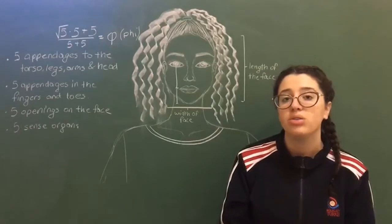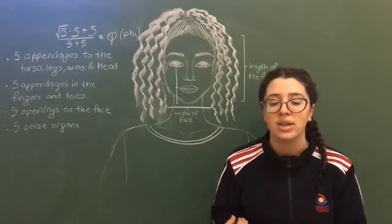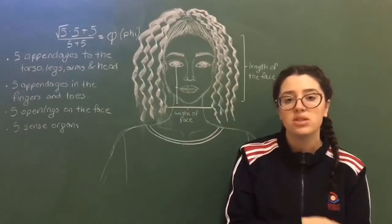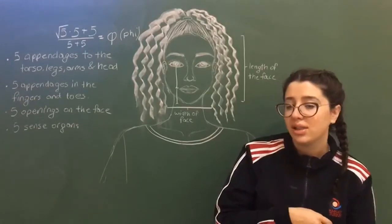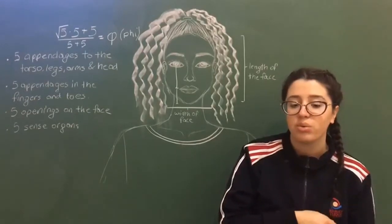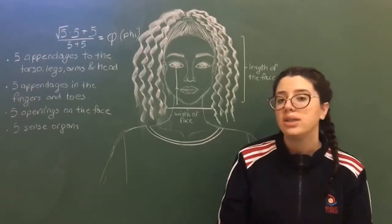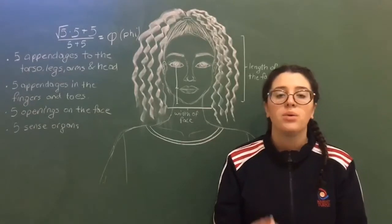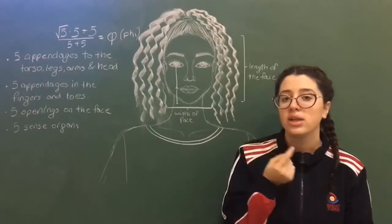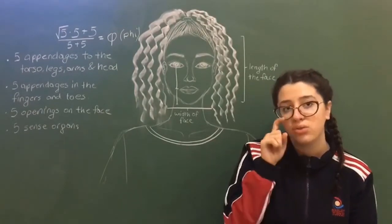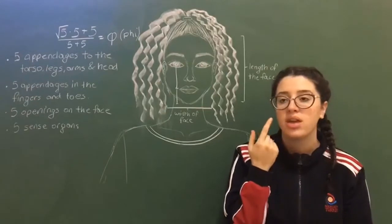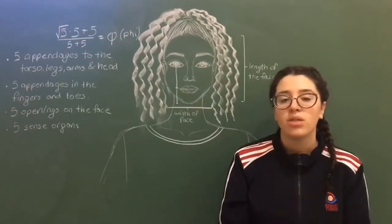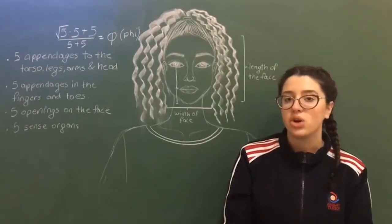We can find numerous golden ratios in our head, but also numerous golden ratios in our body. For example, the ratio of the length of the forearm to the length of the whole arm is the golden ratio.